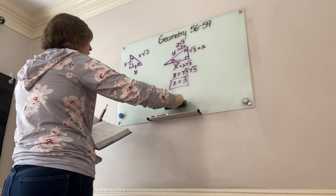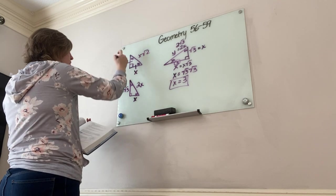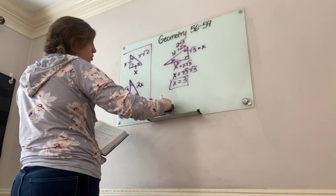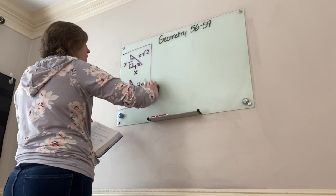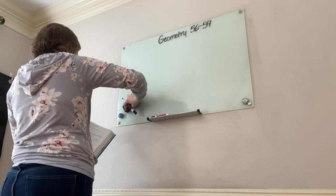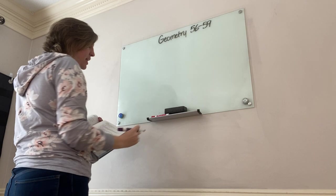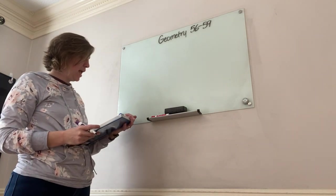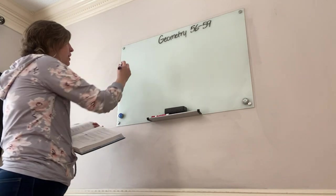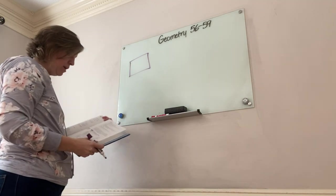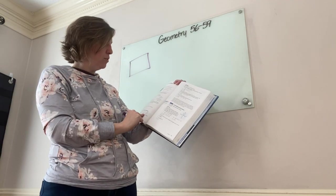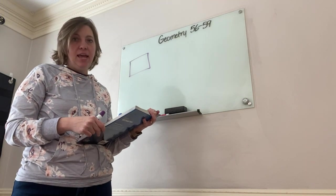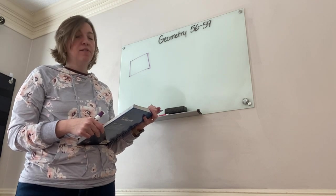Let's look at Lesson 57. I'd encourage you to put the 30-60-90 ratio on a 3×5 card and commit it to memory — especially for standardized tests. Knowing that relationship on an ACT, where you have one minute per problem, can really shorten your time. Lesson 57 is about finding perimeter and area with coordinates. The biggest issue students have with the distance formula is their signs — watch your signs on the coordinate plane.